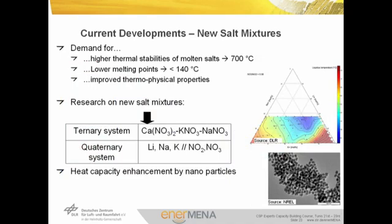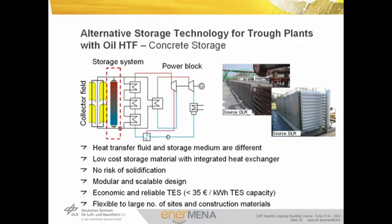Current developments in the area of two-tank molten salt storage focus on the identification of new salt mixtures. These salt mixtures should be cost-effective, able to be operated at temperatures of at least 700 degrees, and should show a lower melting point of less than 140 degrees. Research for these new systems focuses on ternary systems with three components and on systems with even more components. Another approach is the enhancement of heat capacity by addition of nanoparticles.